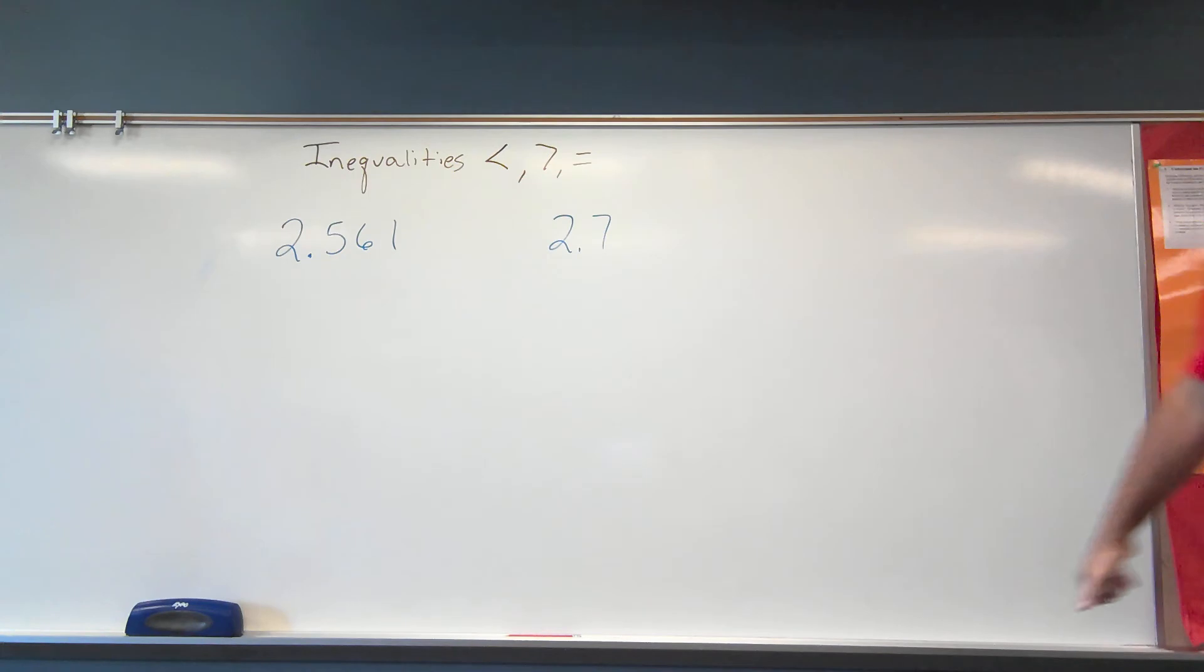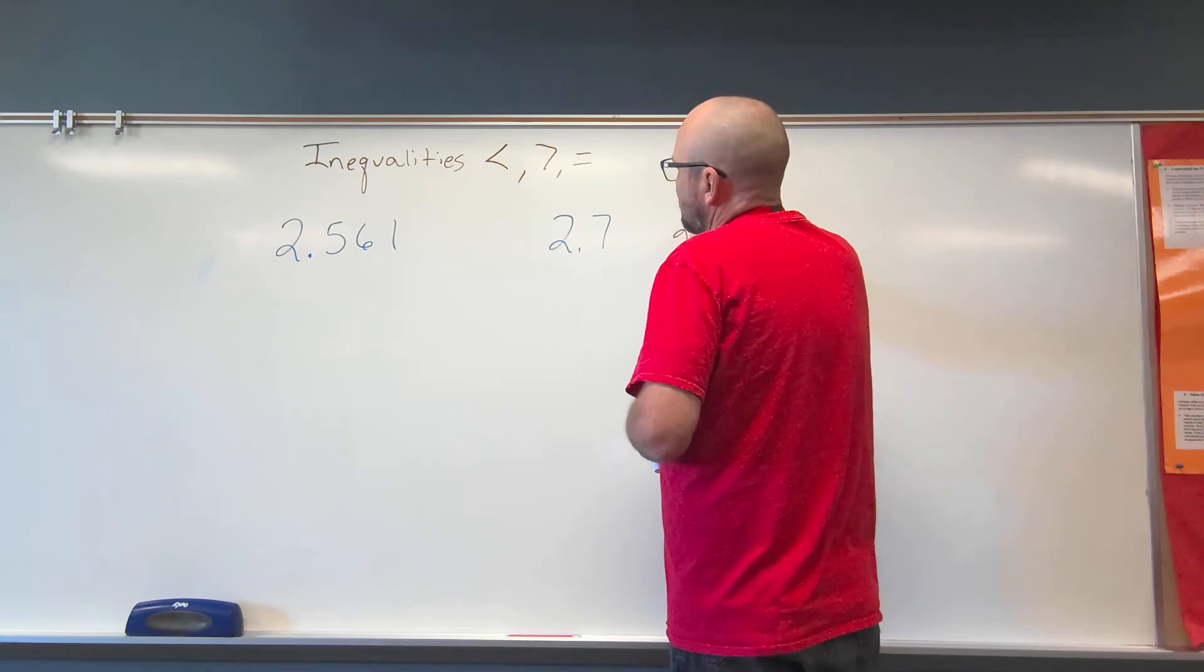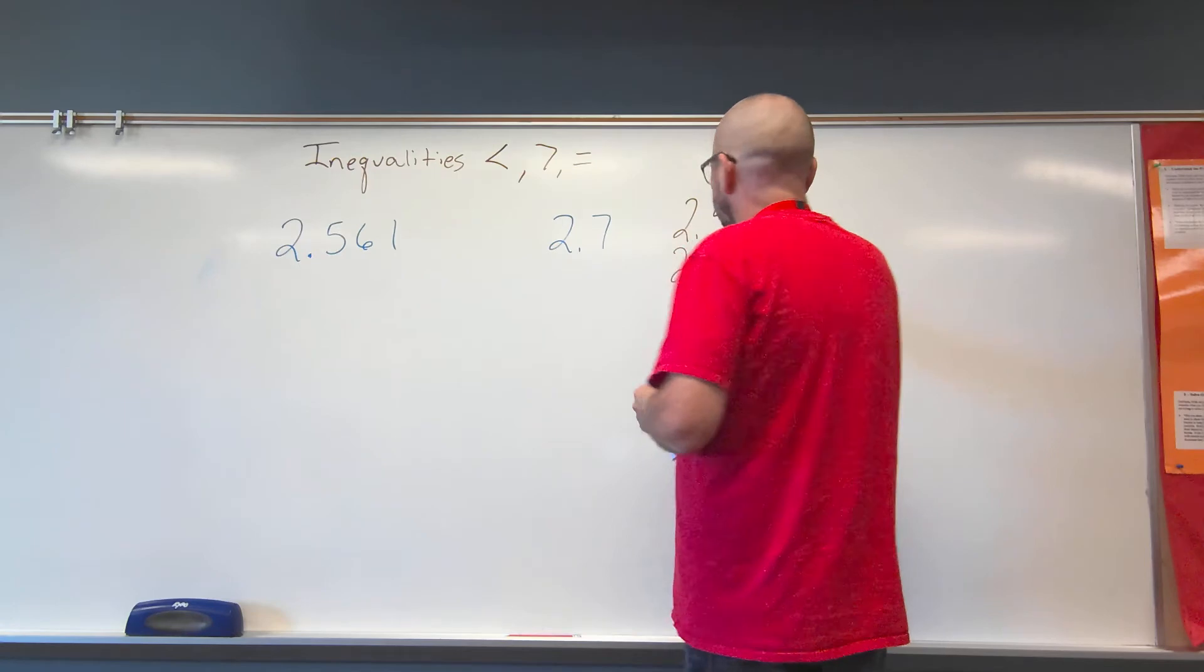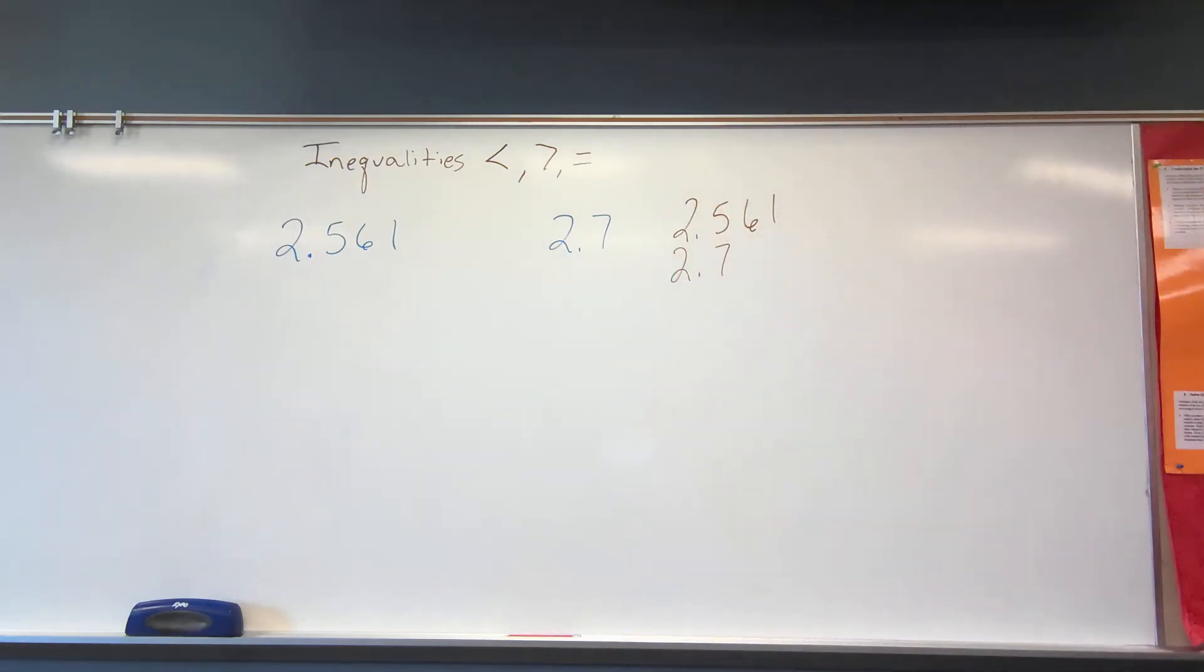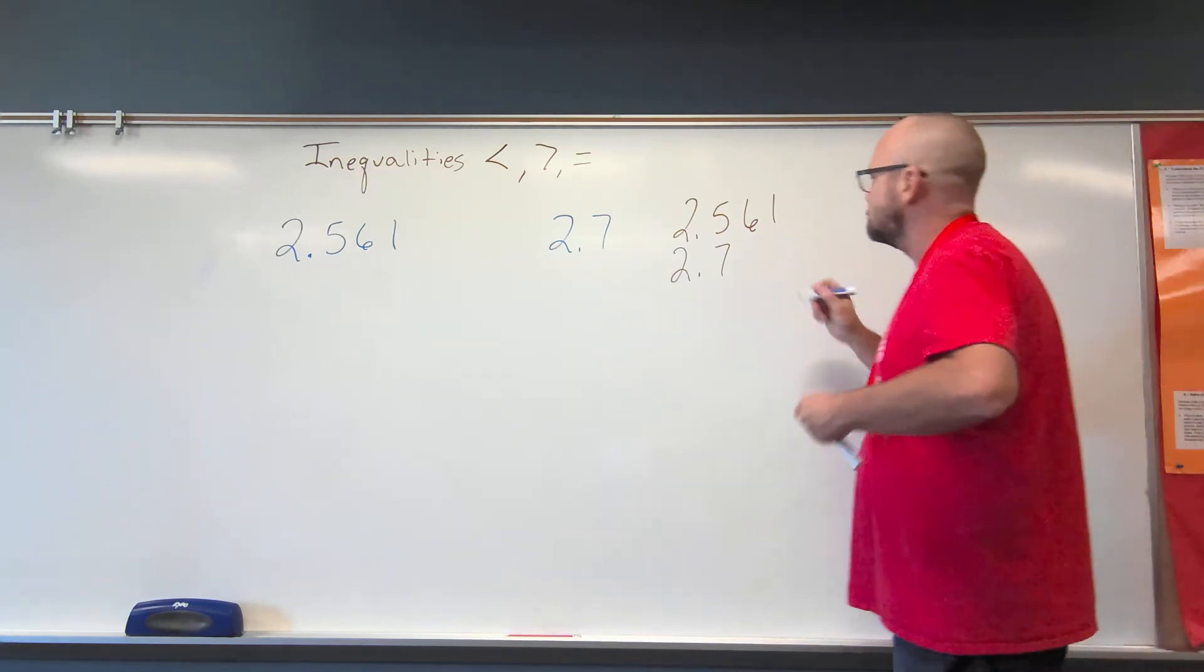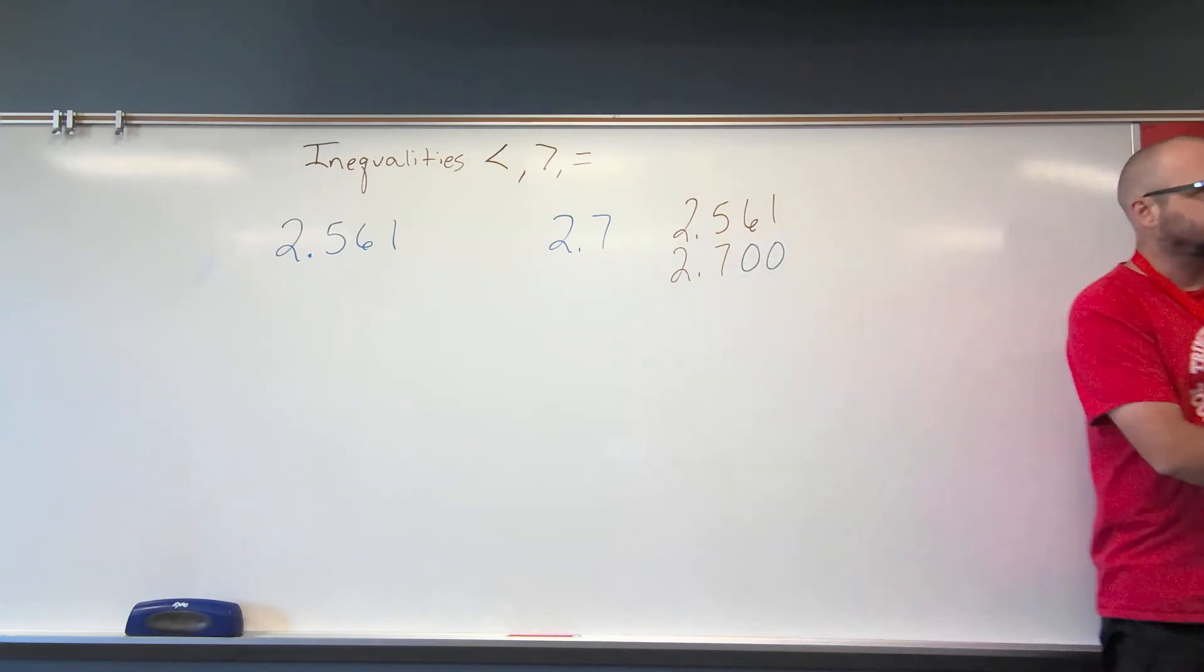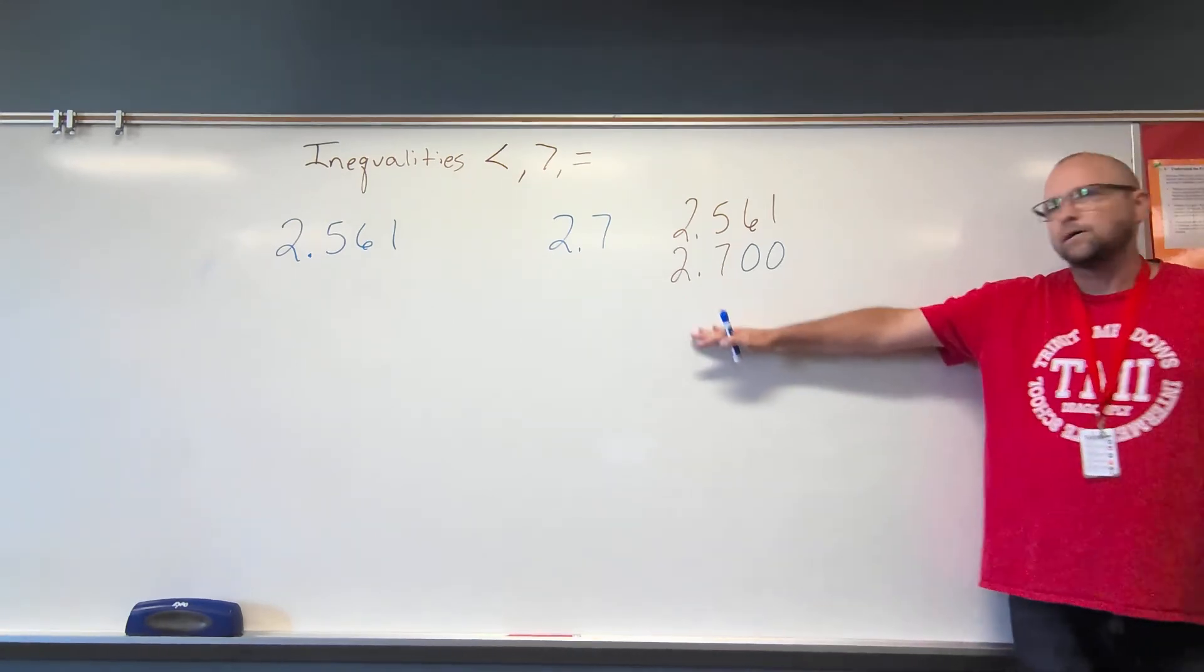We have 2 and 561 thousandths and we have 2 and 7 tenths. Again, if we are going to compare these, we write them down, we line up the place values. So here I have my ones over my ones, my decimal points over my tenths, over my tenths. This one has hundredths and thousandths. Well, I don't have it here, so I'm just going to put it here because I don't change the value because 7 tenths is the same as saying 700 thousandths.